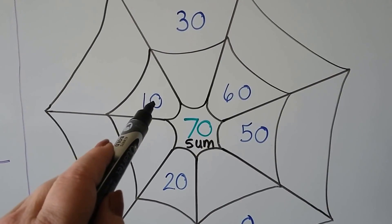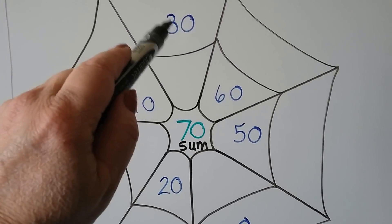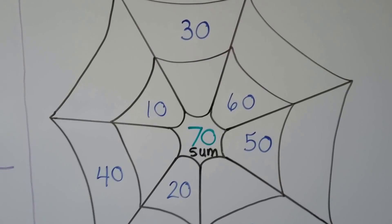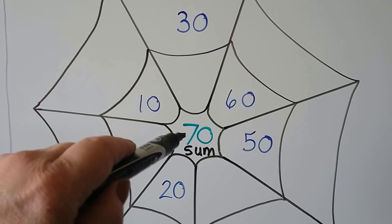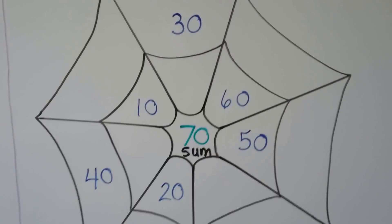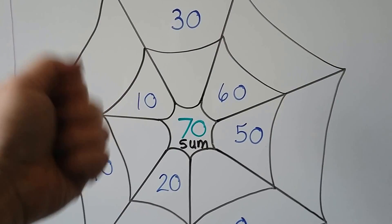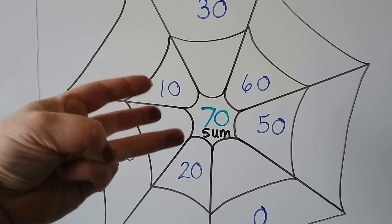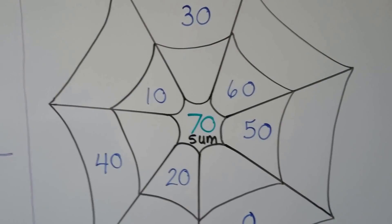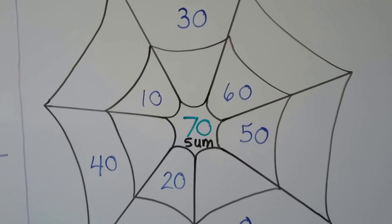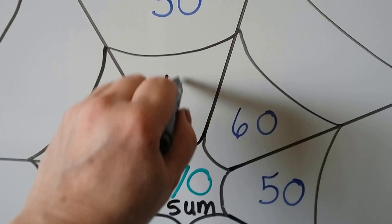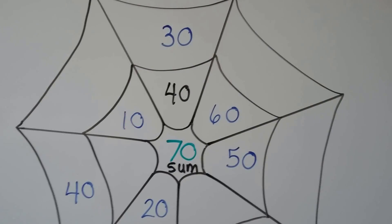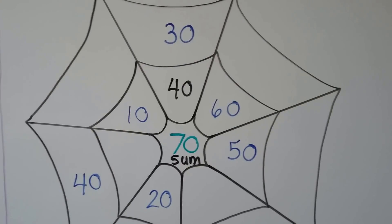Can you think of a number that we can add with thirty that will give us seventy? We can start with the three tens and count on to seven tens. Three tens is thirty: forty, fifty, sixty, seventy. That would be four tens. Four tens is forty. Thirty plus forty is equal to seventy. Three tens plus four tens is equal to seven tens.